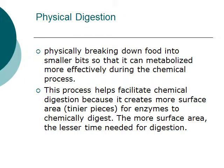So, what is physical digestion? It is the physically breaking down of food into smaller bits, so that it can metabolize more effectively during the chemical process. This process essentially helps facilitate chemical digestion because it creates more surface area, such as chewing food into tinier pieces to make it easier for the enzymes in your body to digest your food. Remember, the more surface area, the lesser time is needed for digestion.